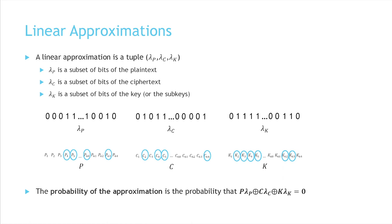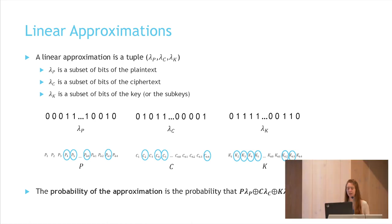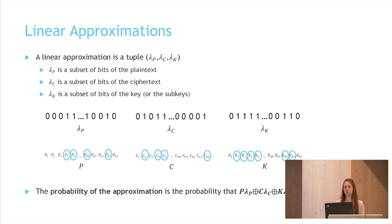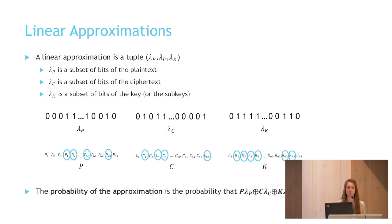A linear approximation is a triple: lambda_P, lambda_C, and lambda_K, where lambda_P is a subset of bits of the plaintext, lambda_C is a subset of bits of the ciphertext, and lambda_K is a subset of bits of the key. The probability of the approximation is the probability that the parity of these subsets of bits equals zero. The bias equals the probability minus one-half; we are usually interested in approximations with the highest absolute value of the bias.